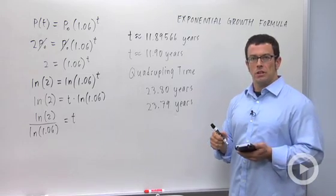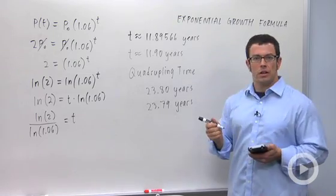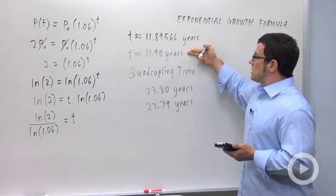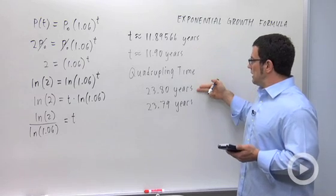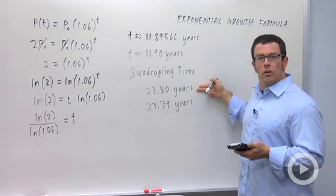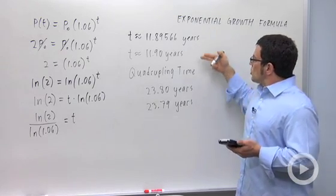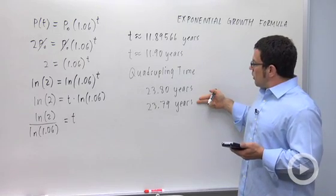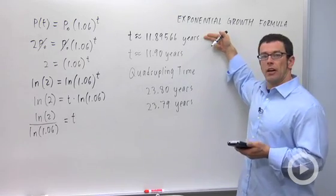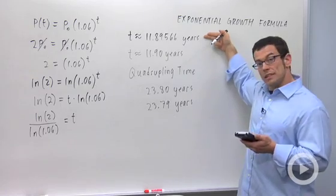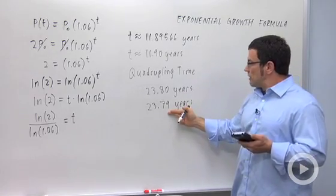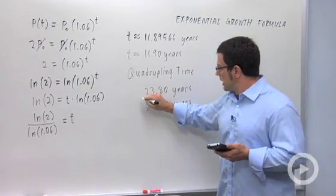You have to be really careful when you're using rounded values to do calculations. This value is rounded to the nearest hundredth. And when I double it, I double whatever round off error there was. So the best way to get my final answer for quadrupling time is to double this value, which is still stored in my calculator. So multiply this times 2 and you get the correct value to the nearest hundredth. This is my answer.